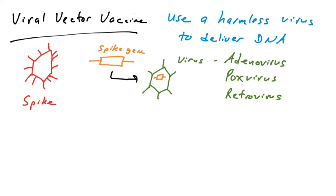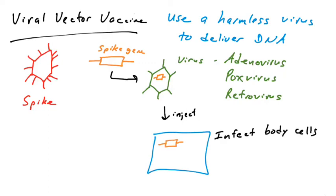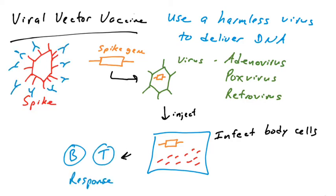The virus is simply a delivery mechanism for the gene you want an immune response to. You're injecting individuals with a virus — not one that makes you sick, but a harmless one — that infects body cells. It delivers DNA into cells (or RNA in the case of retroviruses). Once delivered, the cells make the protein of interest, and you again mount a B cell and T cell response.